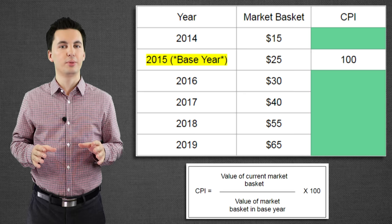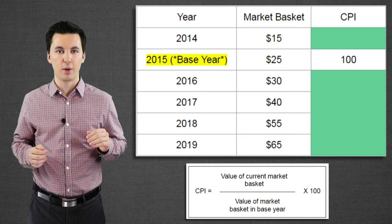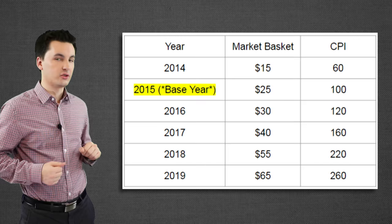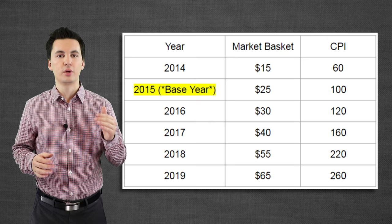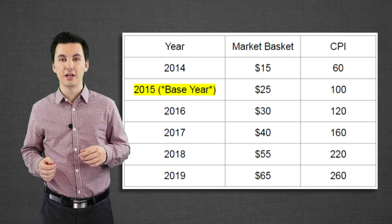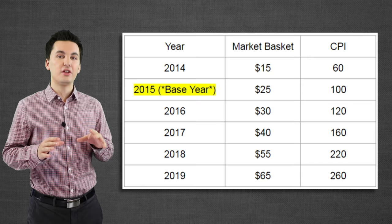Now try to figure out what the CPI would be for all the other years. Remember the formula: current market basket for whatever year you're trying to find, divided by the base year market basket, times 100. Pause this video and try to figure it out. You can see the answers on the screen. When we look at 2016, we have a CPI of 120, meaning 20% inflation since the base year. For 2017, the CPI is 160, meaning a 60% inflation rate from the base year, not from 2016.